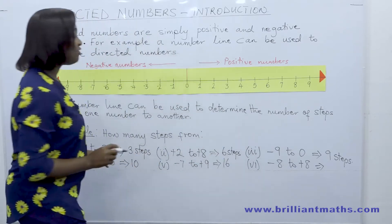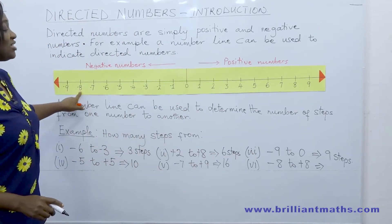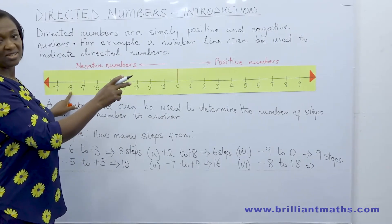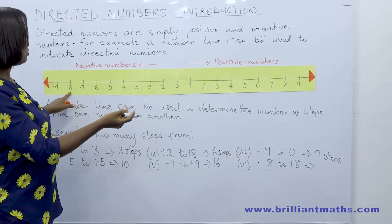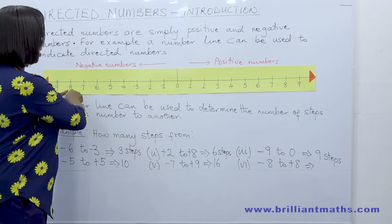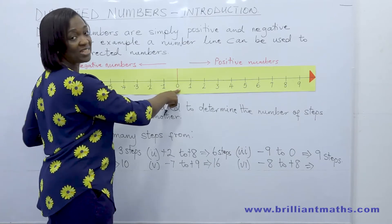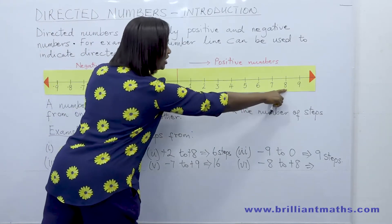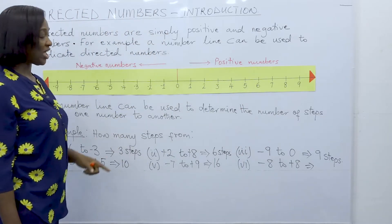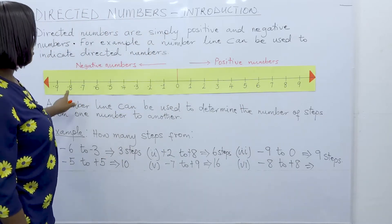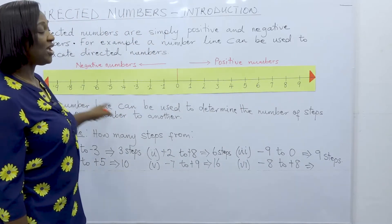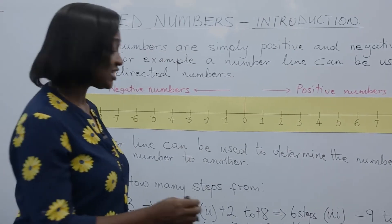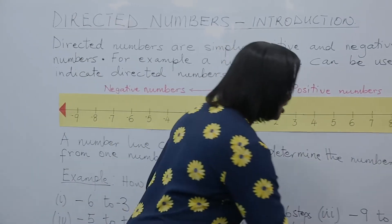Finally, from minus eight to positive eight. Follow the same principle: from minus eight to zero, we have eight steps, and from zero to eight, we have eight steps. So altogether, from negative eight to positive eight, we have sixteen steps.